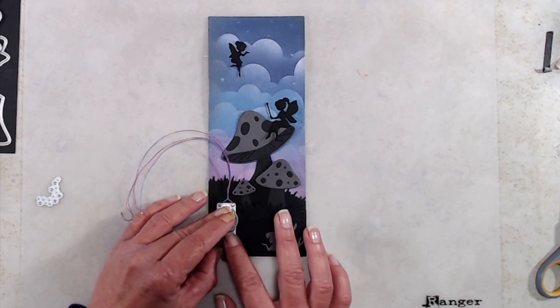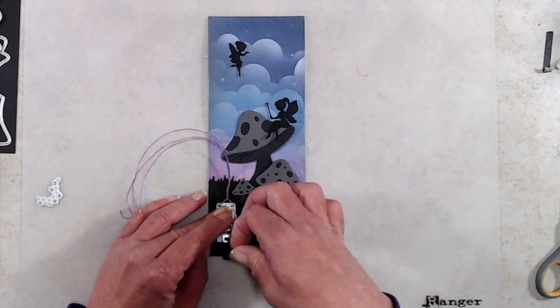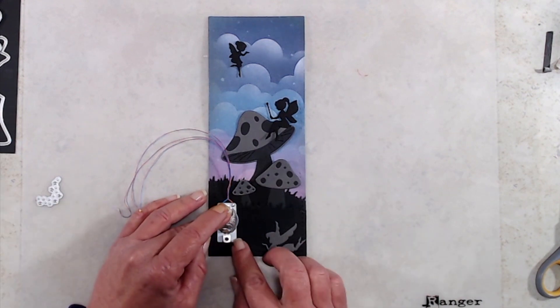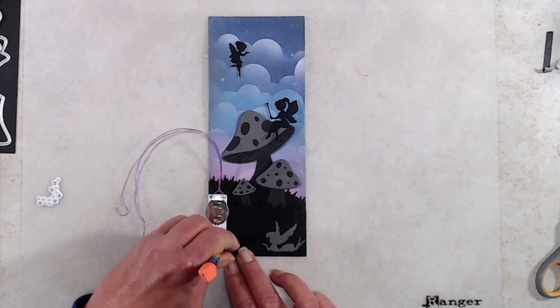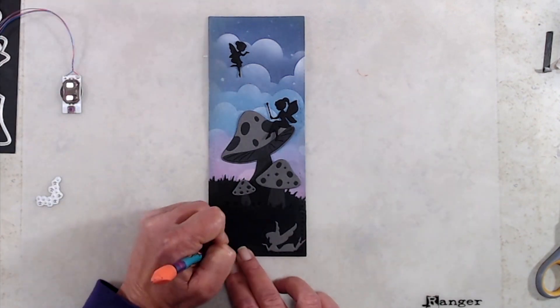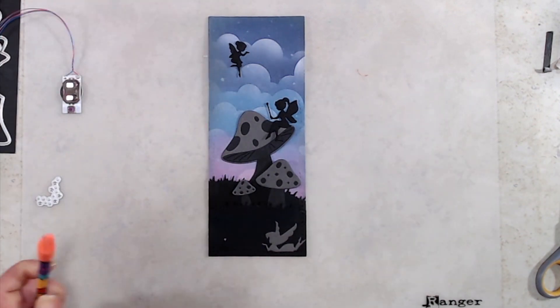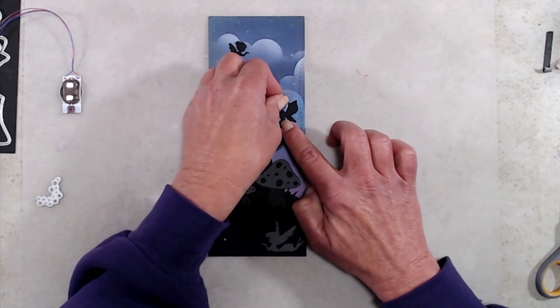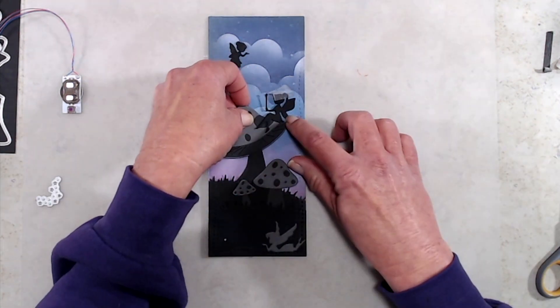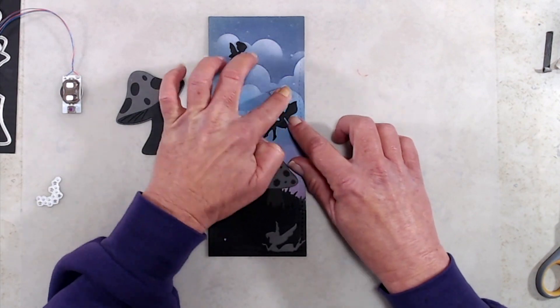So moving right along, after I had run that through my die cut machine with the Card Builder die I did lay everything out where I wanted to have everything go. Before I die cut the fairy dust I'm going to line up the light-up mechanism and I'll kind of hover my pencil over the purple button and then I'll slide the mechanism out of the way and I'll make a mark on the cardstock because I am going to have to punch a hole there for the button of the mechanism to come through.